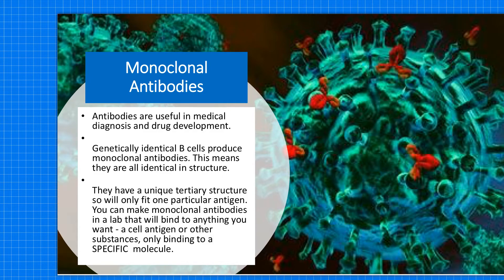Antibodies, just to recap, have a unique tertiary structure, so they'll only fit one particular antigen. Therefore, if in a laboratory you could make monoclonal antibodies, they will bind to anything that you want them to — it could be a cell antigen, or it could be to other substances, for example a medicine. So only binding to a specific molecule.